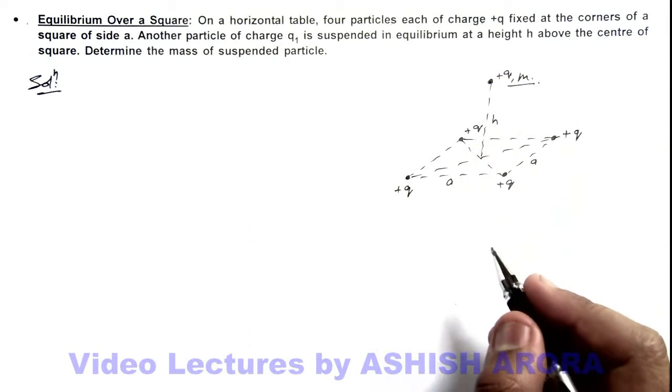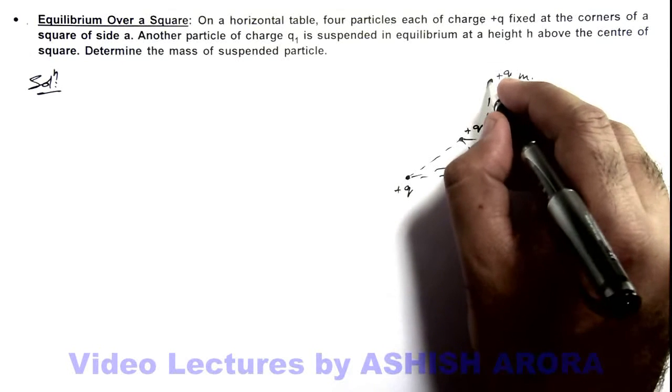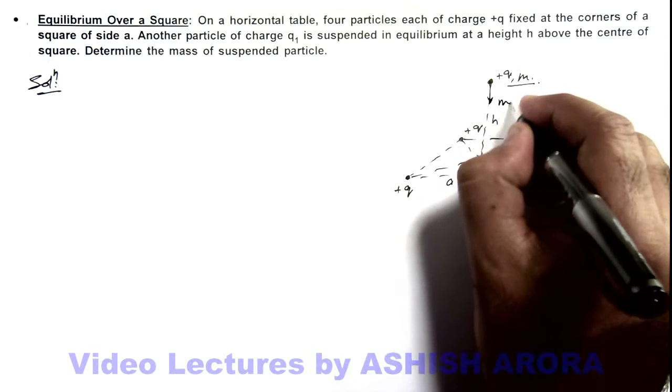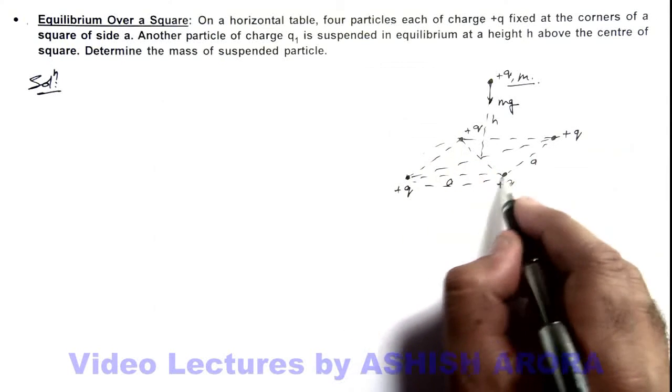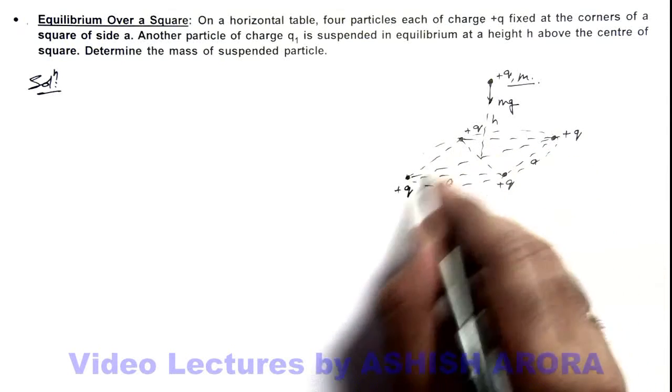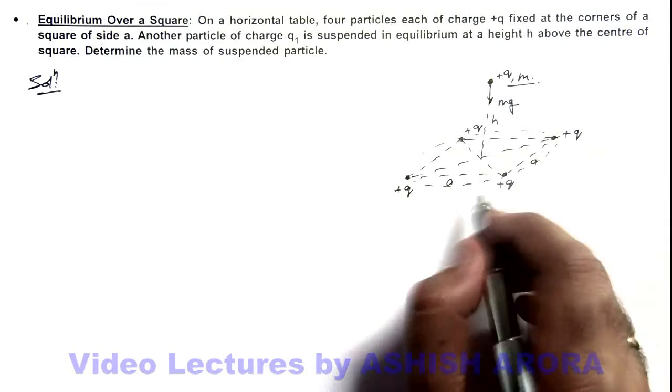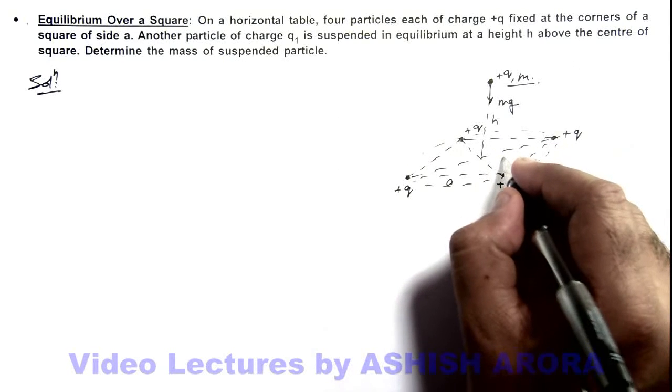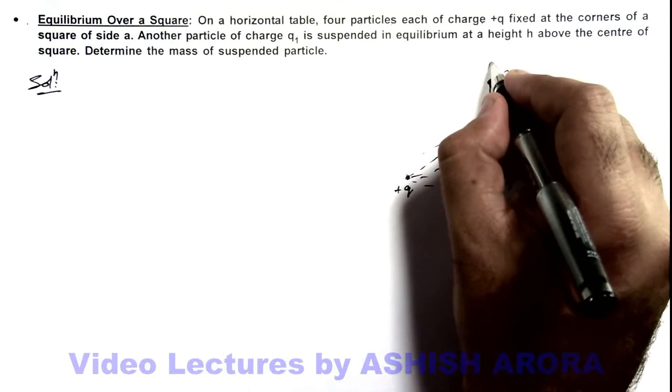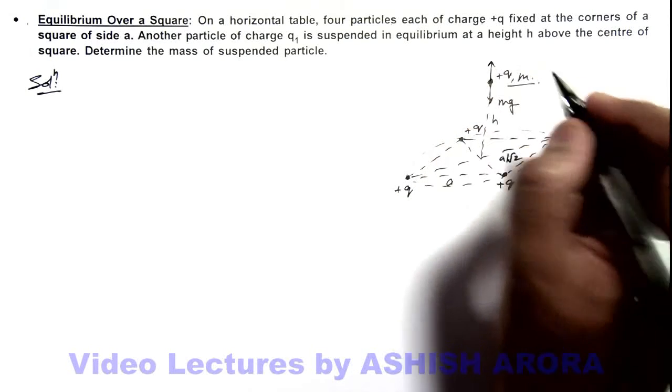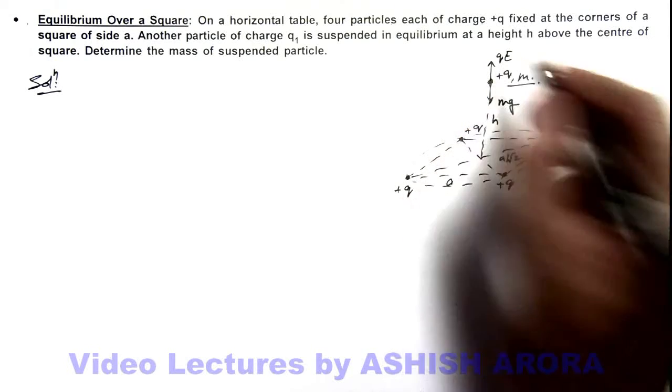Then in this situation here we can see it'll experience the gravity in downward direction, and due to these four charges which can be considered symmetrically fixed on a ring of size a by root 2, these charges will produce an electric field in upward direction. So this will experience an upward electric force qE.